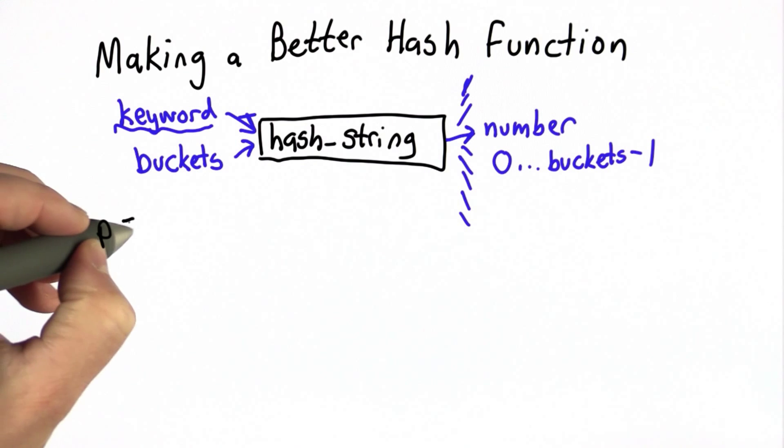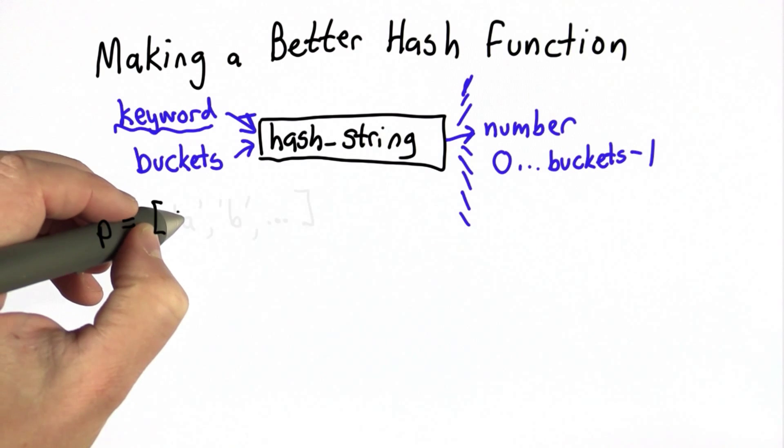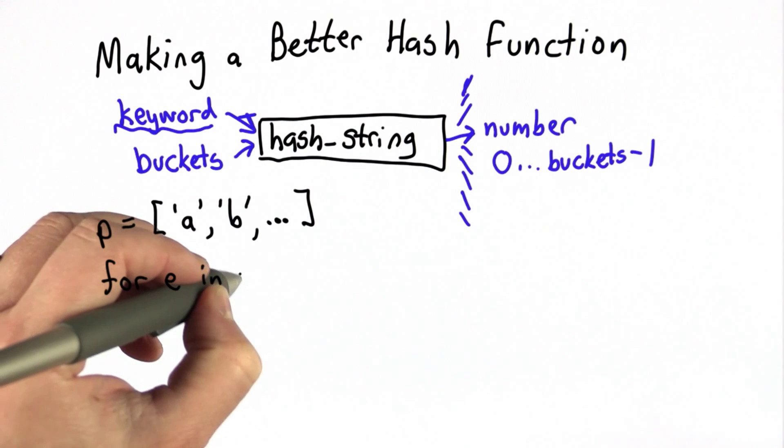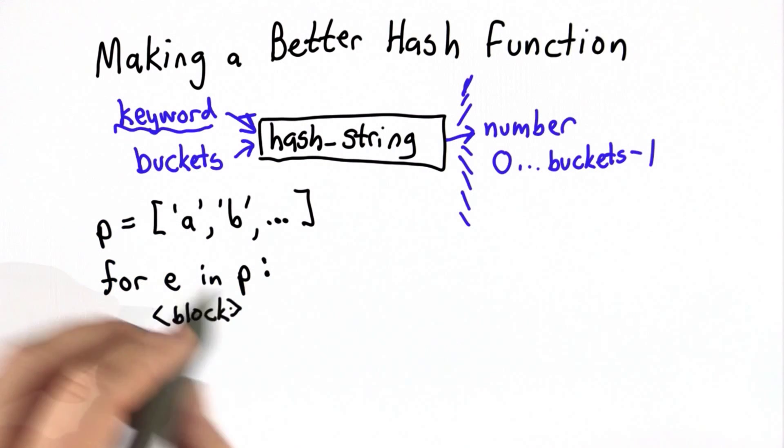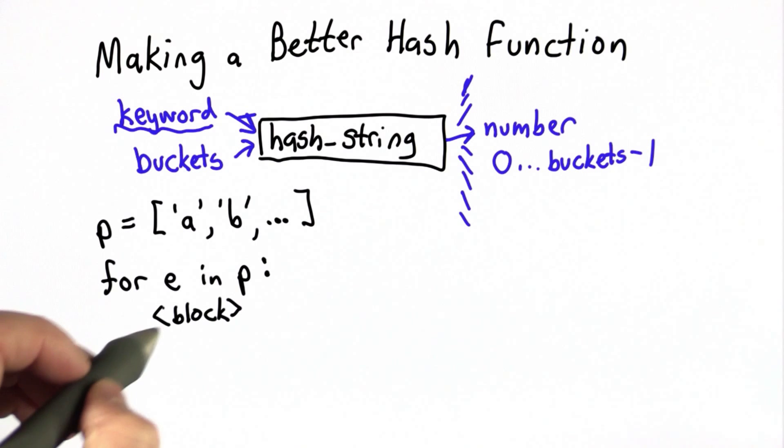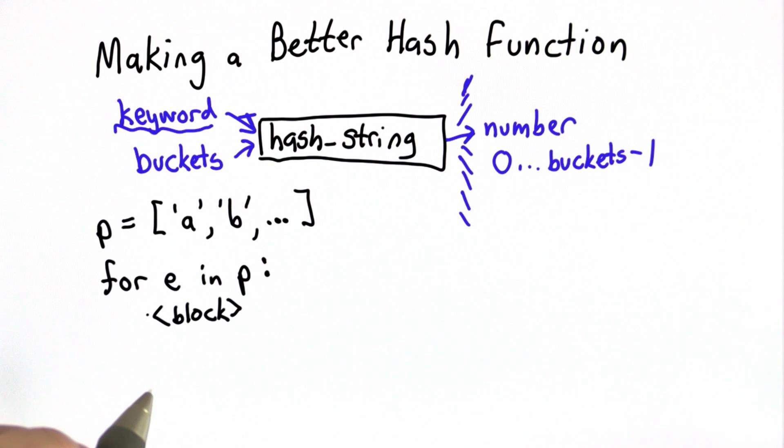We saw that with lists, if we had a list of items, we could use the for loop construct to go through the elements in the list. This would go through each element in p, assigning it to the variable e, and executing whatever is in the block for each element of p.